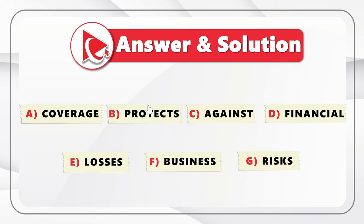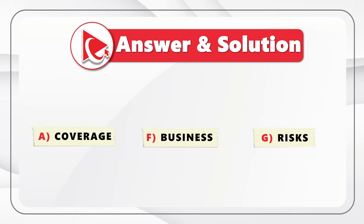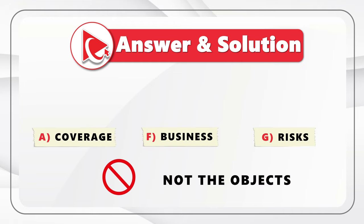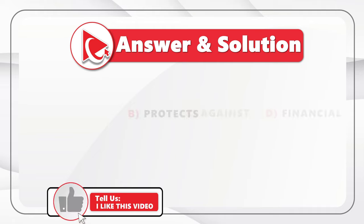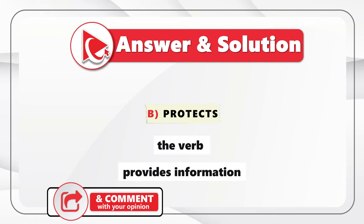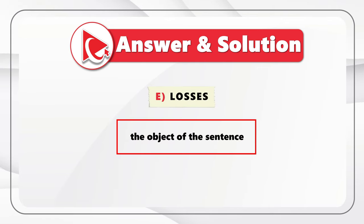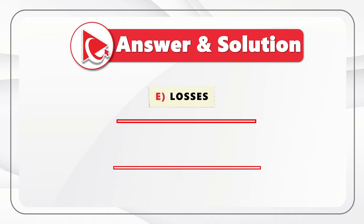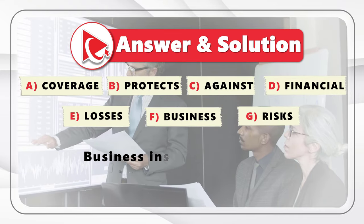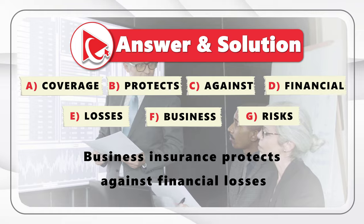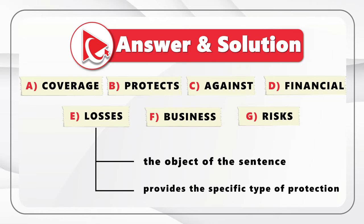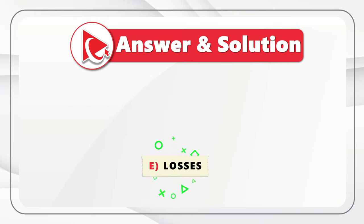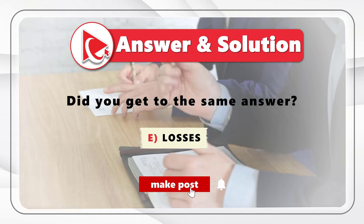Based on this analysis, the sentence is: 'Business insurance protects against financial losses.' The last word in the sentence is Losses — it is the object and provides the specific type of protection. So the correct answer is Choice E, Losses. Did you get the same answer? If not, please post your answer and solution in comments.